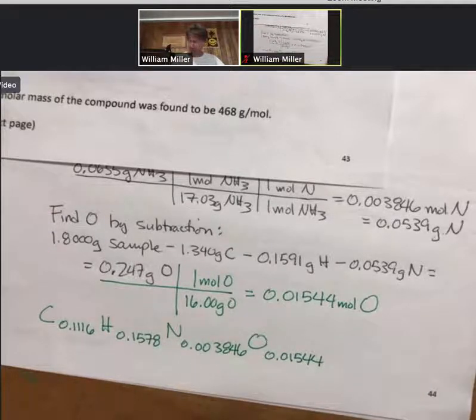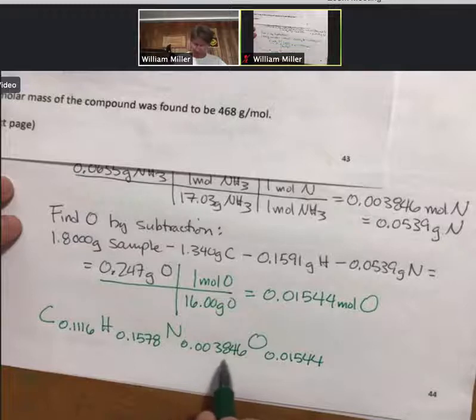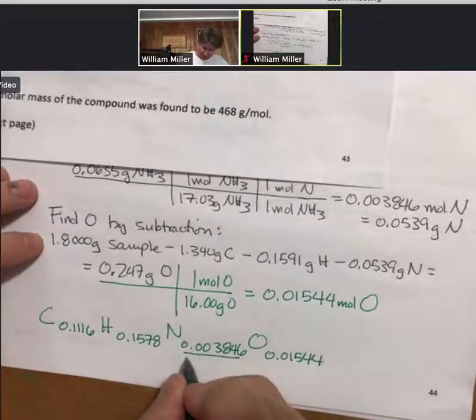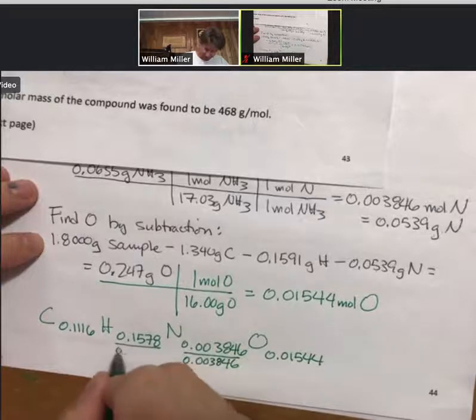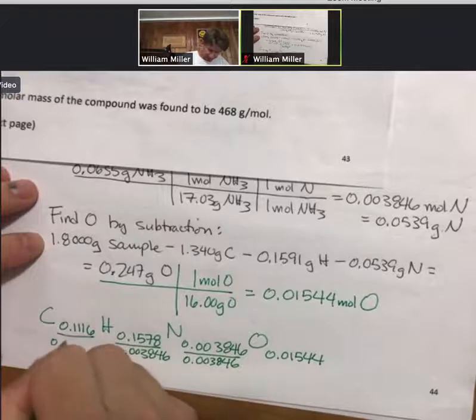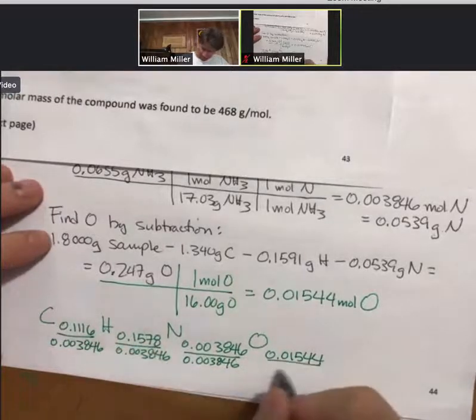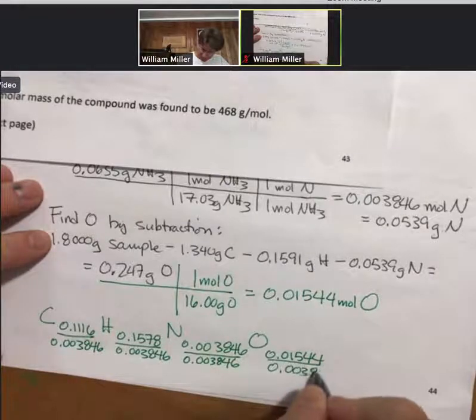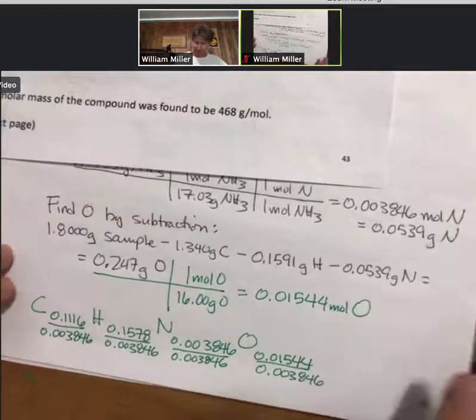You'd never think it'd work out, would you? But let's see. Next, the moles of nitrogen are my smallest number. Divide everything by that. And I think I've sort of run out of space.